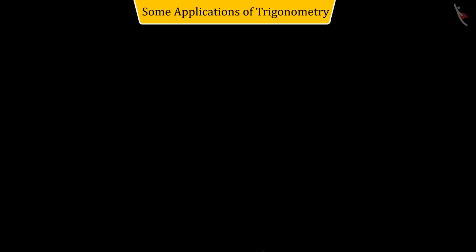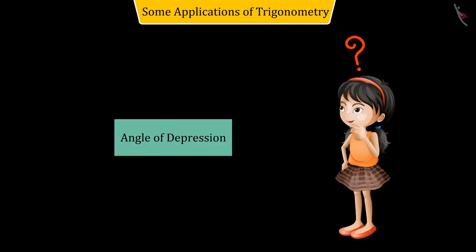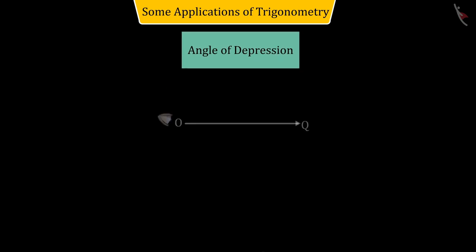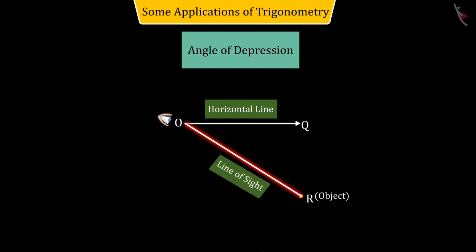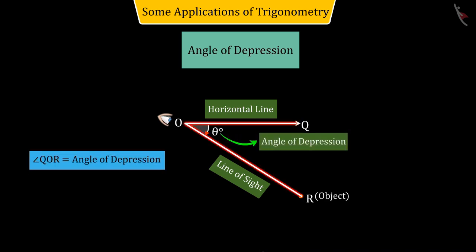So now, can you tell what is the angle of depression? Absolutely correct. If an object lies below the horizontal line passing through the person's eye, then the angle QOR formed between the line of sight OR and the horizontal line OQ is called the angle of depression.